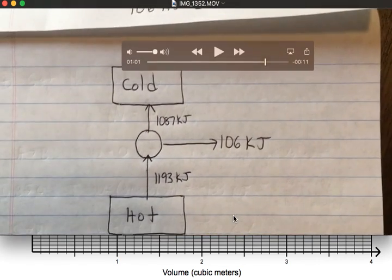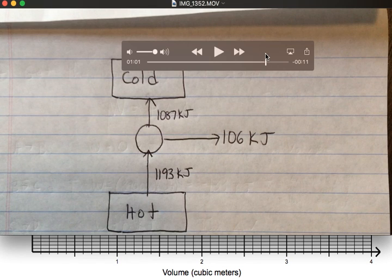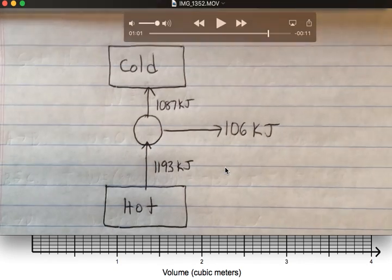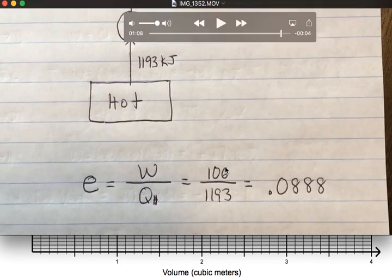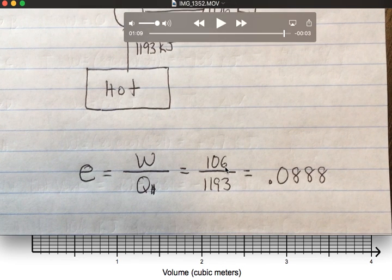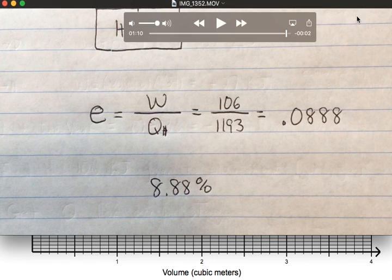Instead, what we want to do is draw a schematic of our engine and realize that the heat that enters the system would be our QH. The heat that leaves our system is our waste heat. That's 1087. And the net work was 106. If all goes well, the energy that enters our system equals the energy that leaves our system. Finally, to get the efficiency, we do efficiency equals work over QH and we get an efficiency of about 8.8%.